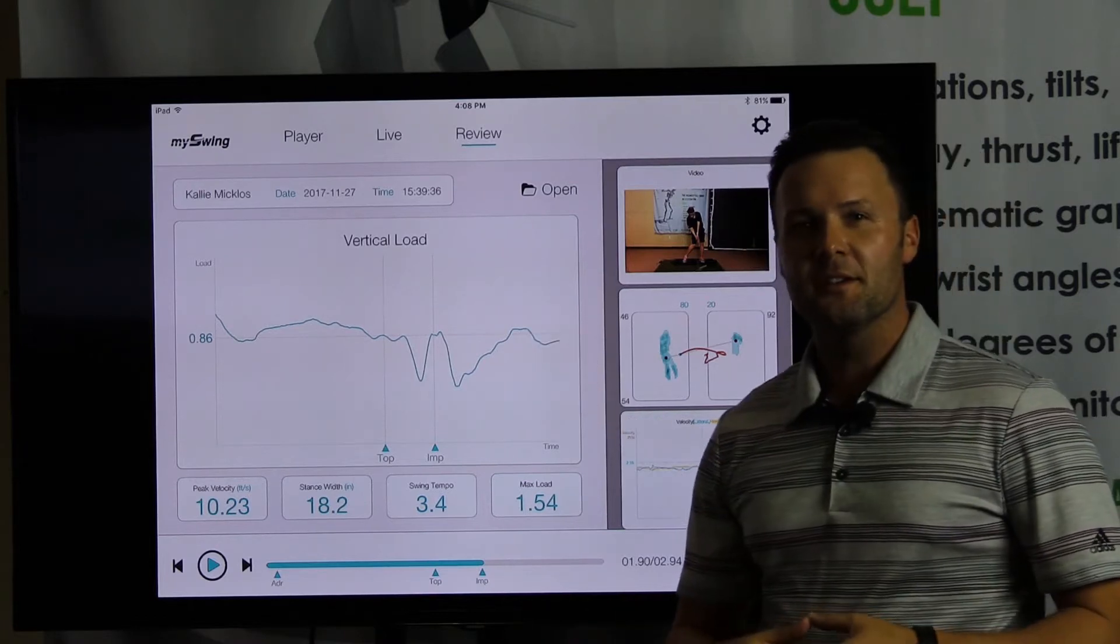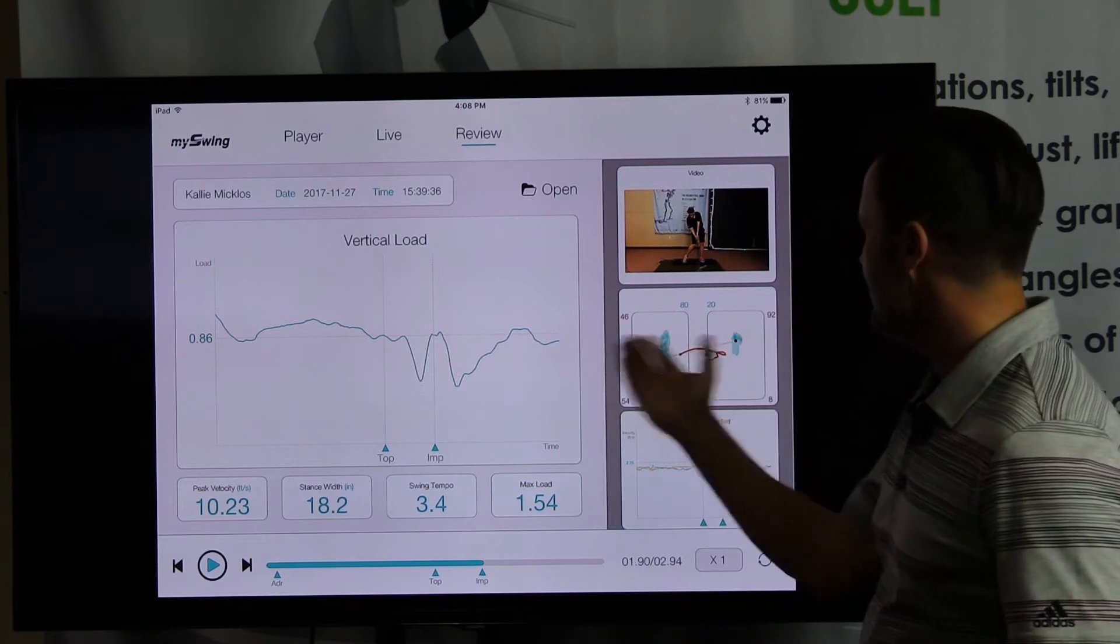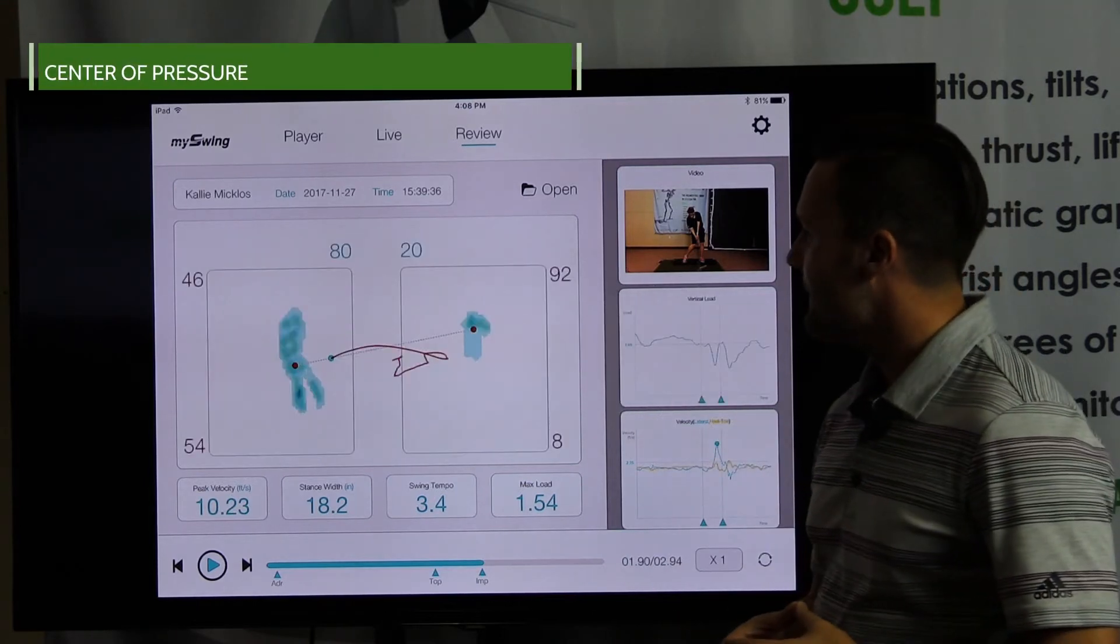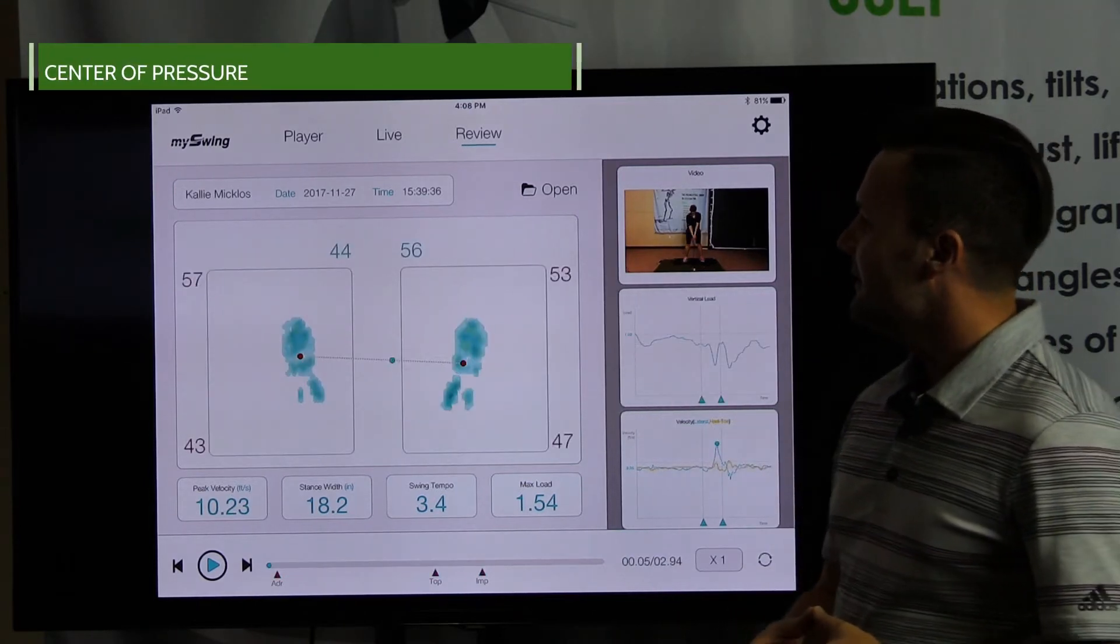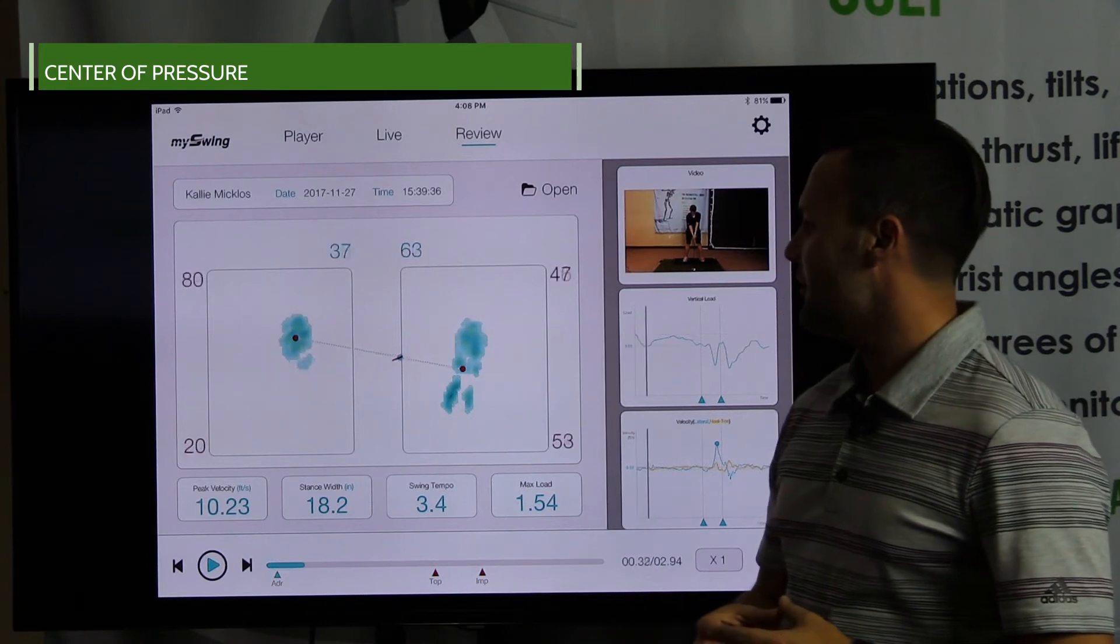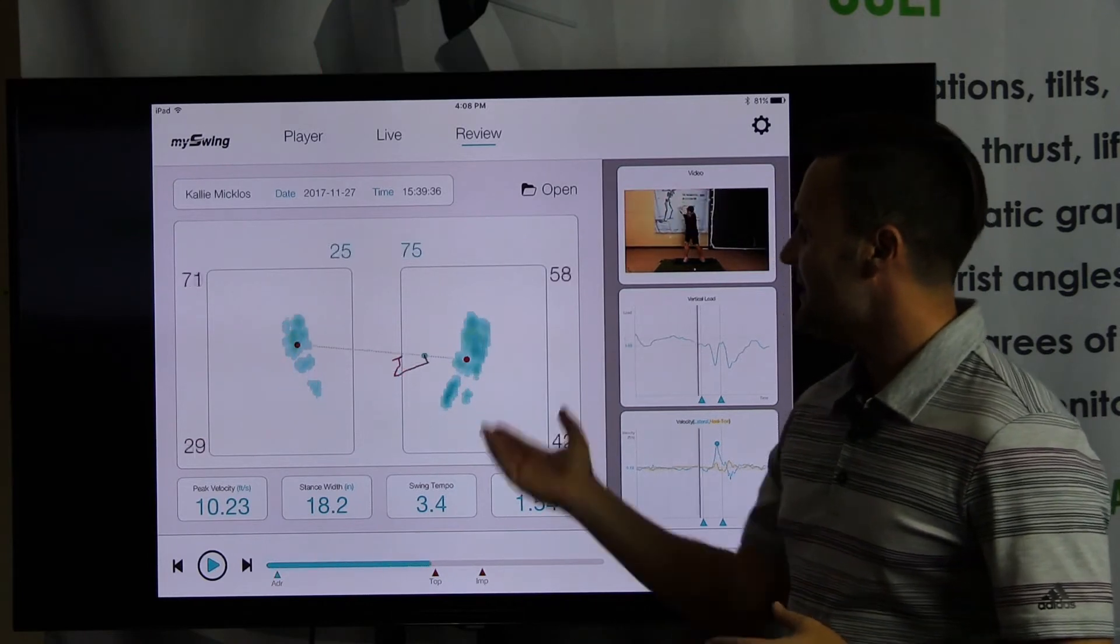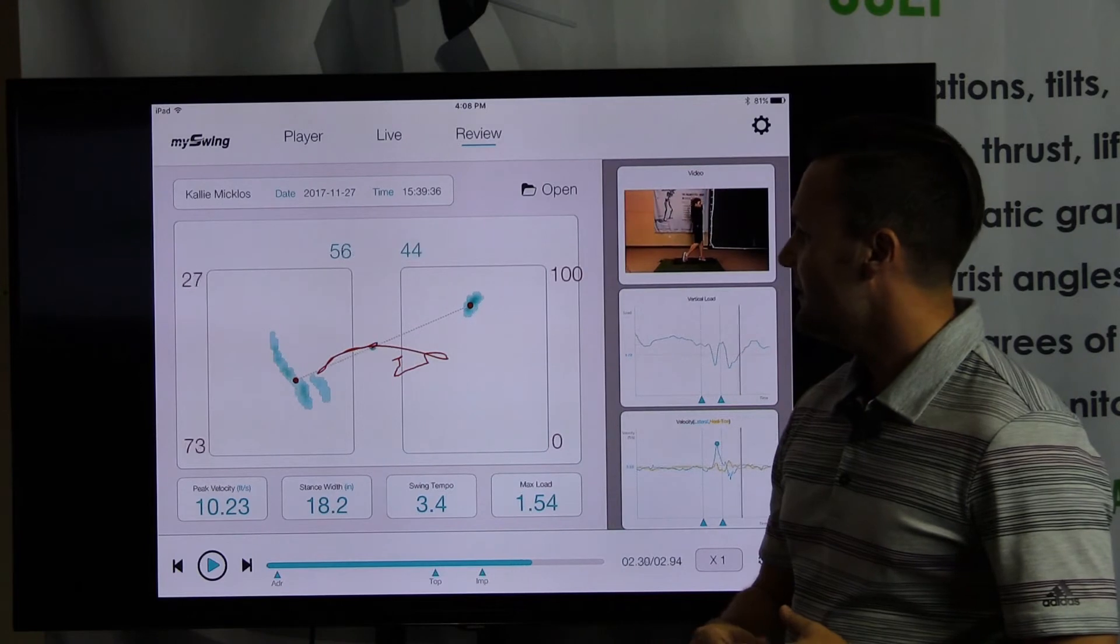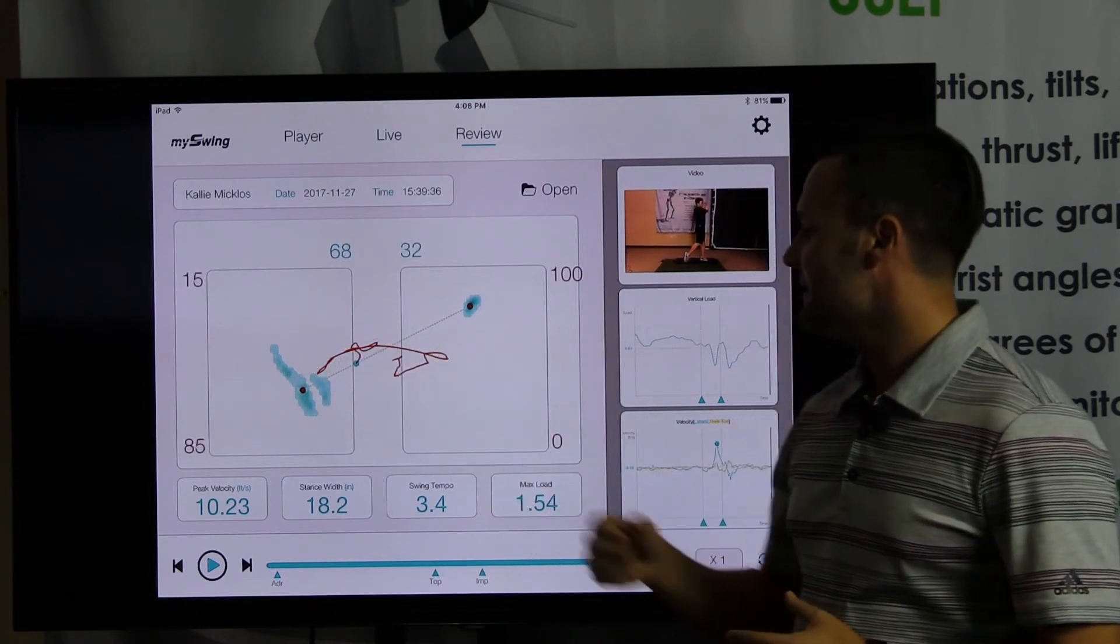Let's go into the COP chart. COP chart—this is the center of pressure trace. You can see the outline as it goes from the trail side to the lead side throughout the golf swing.